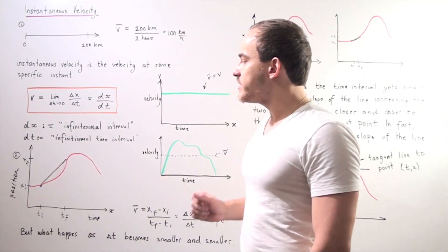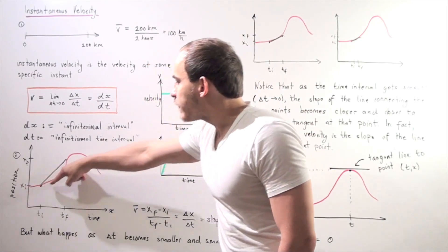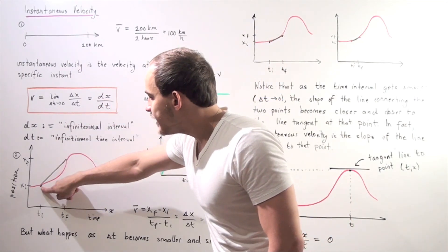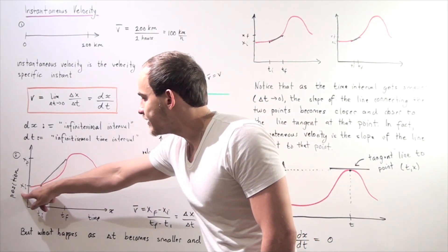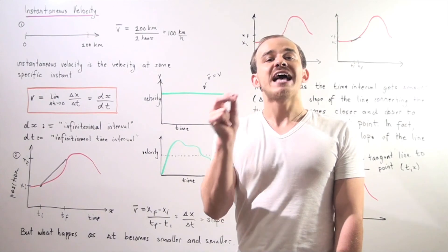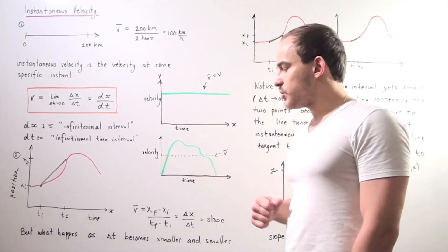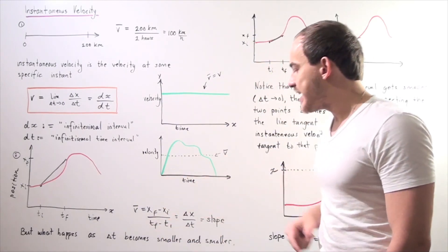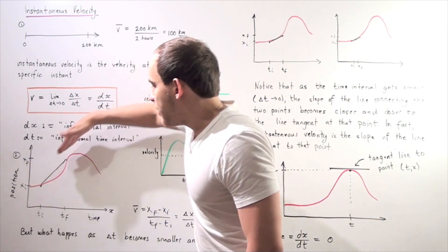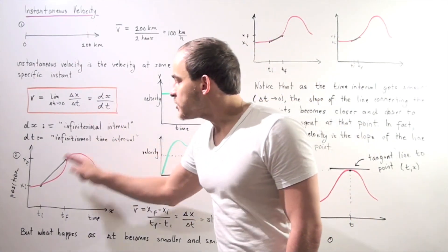Let's go to this graph here. Suppose that our y-axis is our position and our x-axis is our time — this is our displacement function. Suppose we choose two points: this point here, which is our initial point at t-initial and x-initial, and this is our final point at t-final and x-final. To find the average velocity between these two points, average velocity equals change in x over change in t. Notice that this is simply the slope of the line that passes through these two points. So my average velocity between these two points is simply that slope.